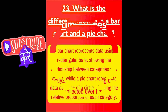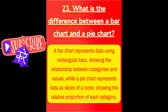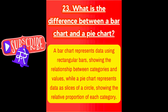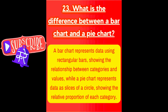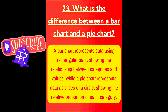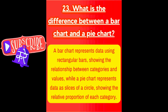Next question is, what is the difference between a bar chart and a pie chart? A bar chart represents data using rectangular bars, showing the relationship between categories and values, while a pie chart represents data as slices of a circle, showing the relative proportion of each category.